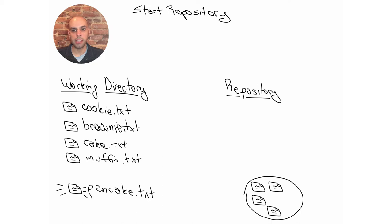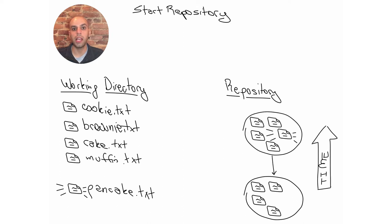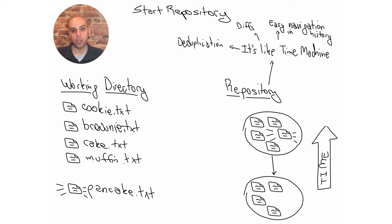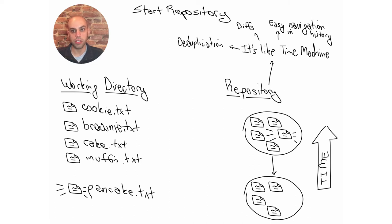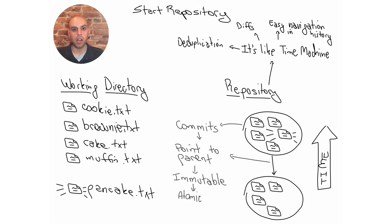Maybe Alice creates another file, like pancake.txt. Then the repository will contain another snapshot of the whole working directory, including that new file. In some ways, the repository is like Time Machine in macOS. It offers deduplication of files — internally, Git will be smart enough to not store the same files over and over, occupying a lot of disk. It also offers utilities to see the difference between files among different versions, and a way to navigate history. These snapshots are called commits.